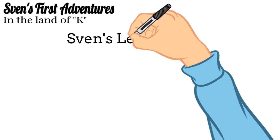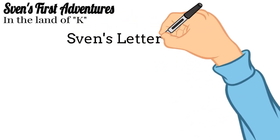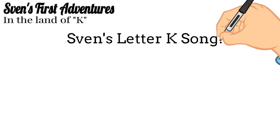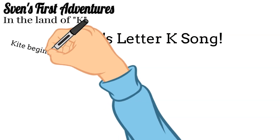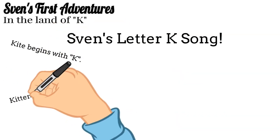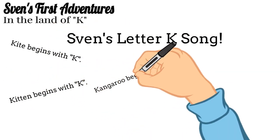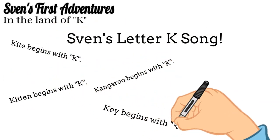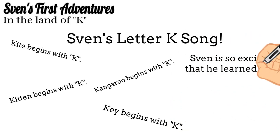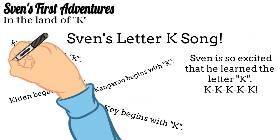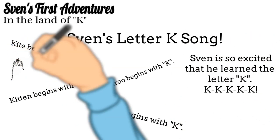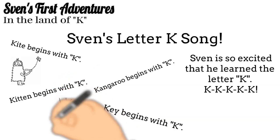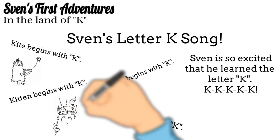And now, please join me in singing Sven's letter K song. Kite begins with K. Kitten begins with K. Kangaroo begins with K. Key begins with K.